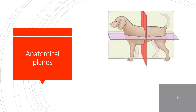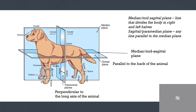Within the videos covering the anatomical planes of the body, images such as this will help you further identify such planes. Here we can see the median plane, the dorsal plane, the transverse plane, and also the median and mid-sagittal plane. Please note that the median and mid-sagittal plane is the line that divides the body into left and right halves. The sagittal, or paramedian, plane is any line parallel to the median plane. The dorsal plane is parallel to the back of the animal and perpendicular to the long axis of the animal.